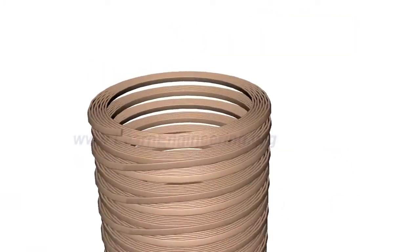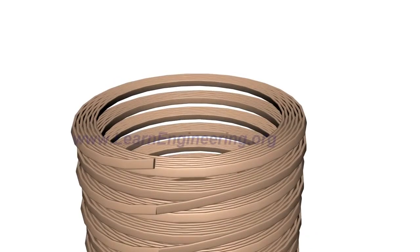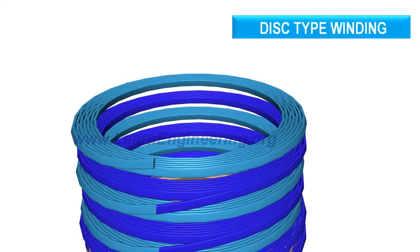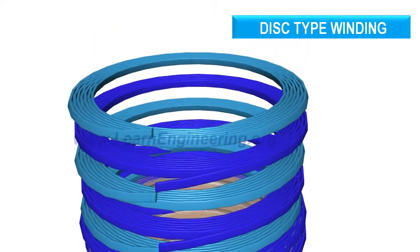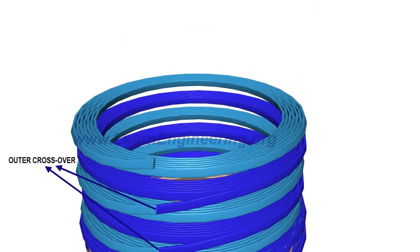Transformers with high power ratings generally employ a special kind of winding known as a disc-type winding, where separate disc windings are connected in series through outer and inner crossovers.